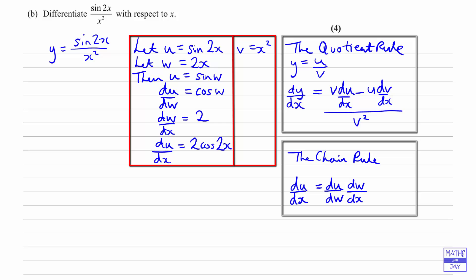And then we're also going to need for the quotient rule dv by dx, so that's going to be relatively straightforward. So dv by dx is 2x. So now we're ready to substitute everything into the quotient rule.